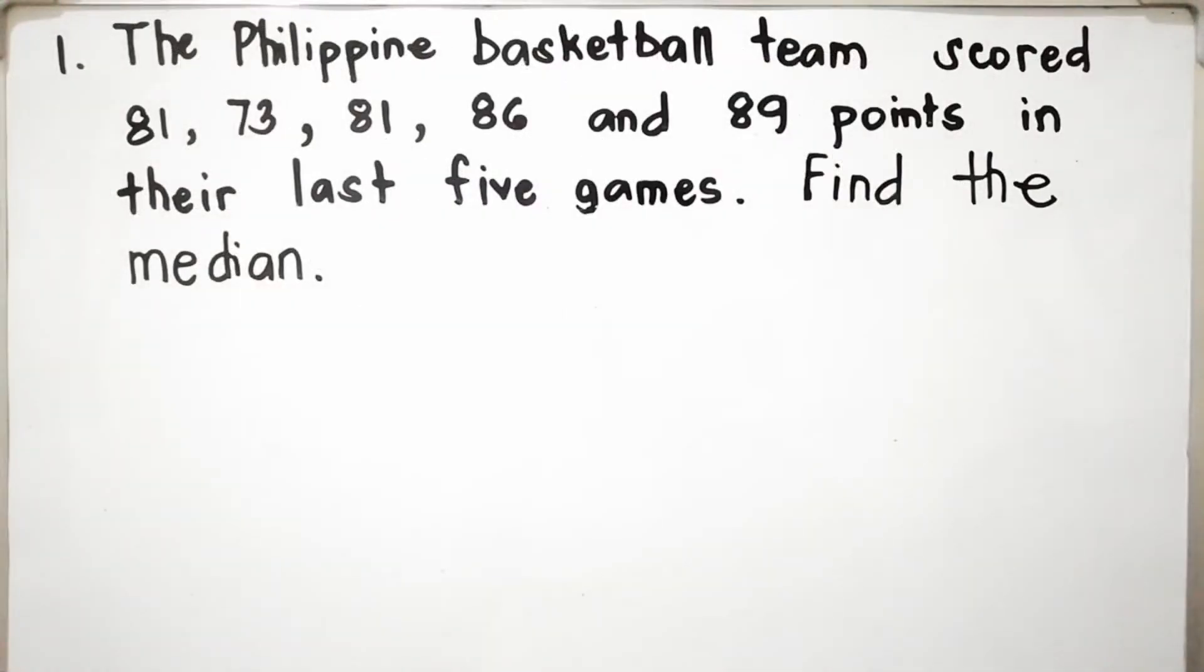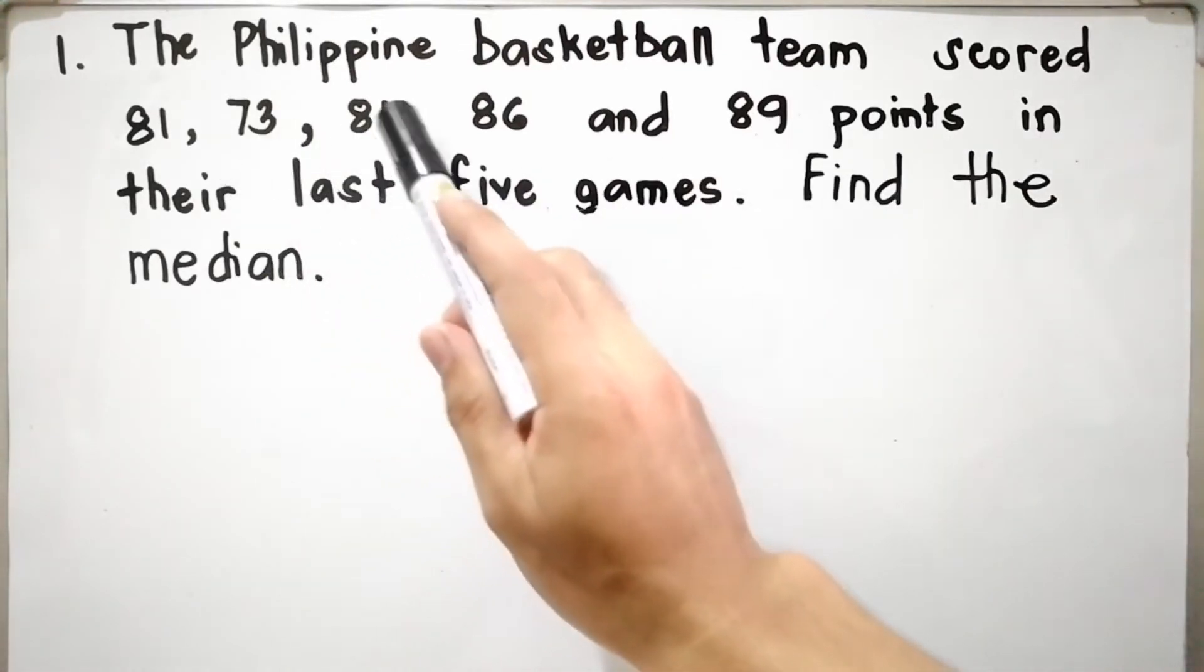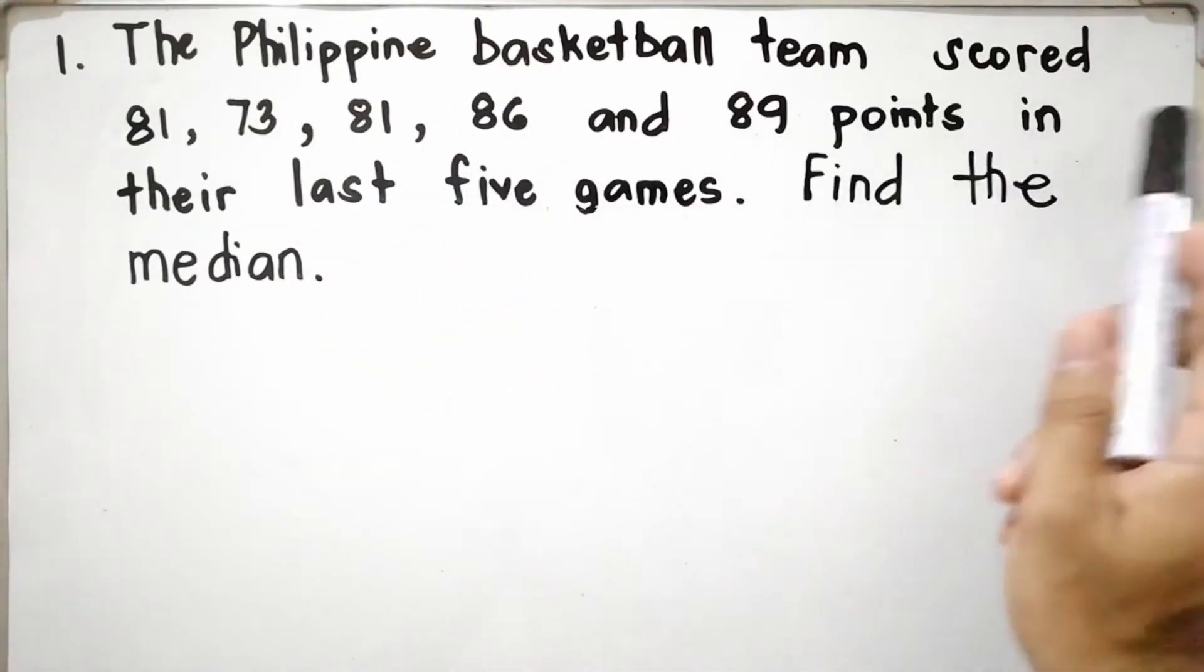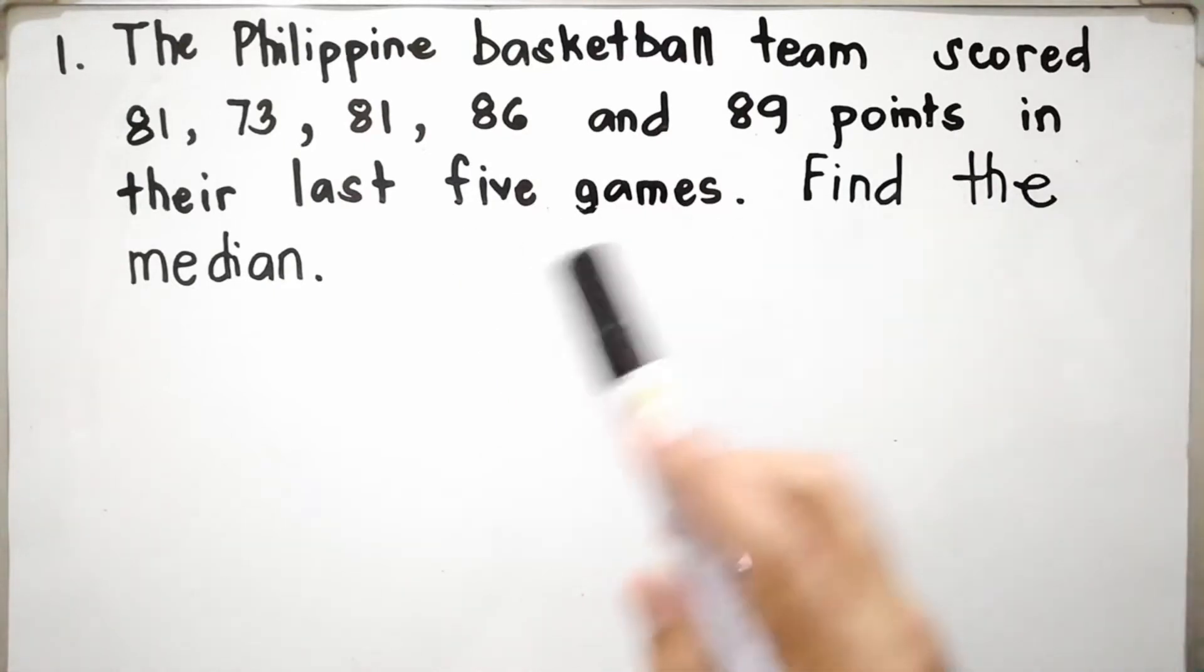Let us have example number 1. The Philippine basketball team scored 81, 73, 81, 86, and 89 points in their last 5 games. Find the median.